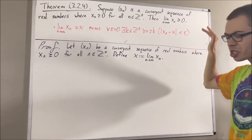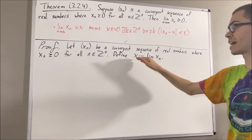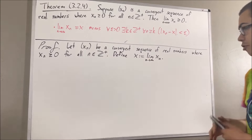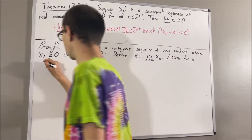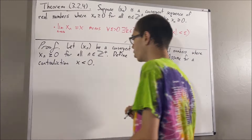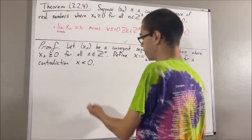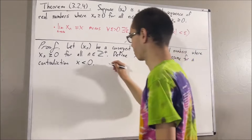Well, let's assume for a contradiction that we instead have that x is less than zero. Then the negative of x is greater than zero.